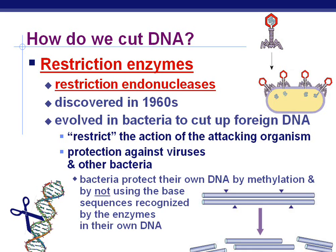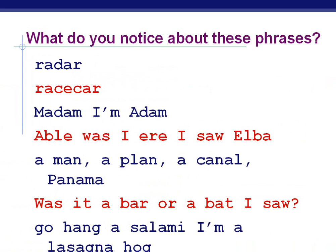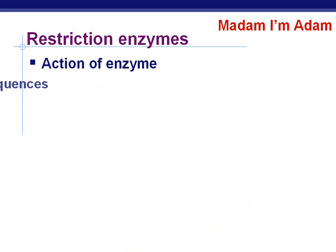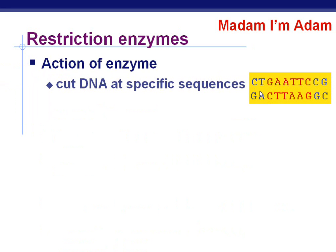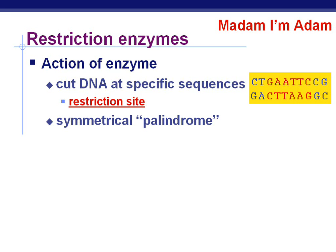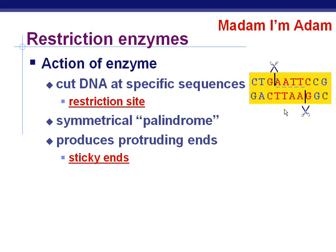Take a look at these phrases — they're palindromes. They read forward the same as they read backwards. Restriction enzymes cut the DNA at very specific sequences called restriction sites, which are symmetrical palindromes. They produce cuts leaving little leftover ends called sticky ends, because they stick out. Therefore, they're going to want to bind to something, and they will bind to any complementary DNA.